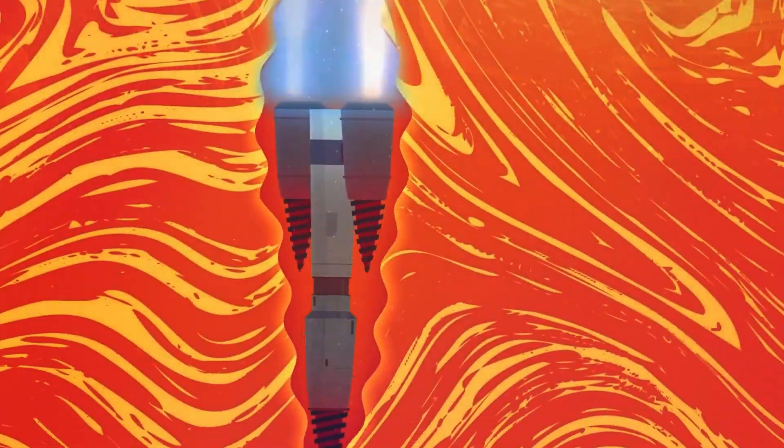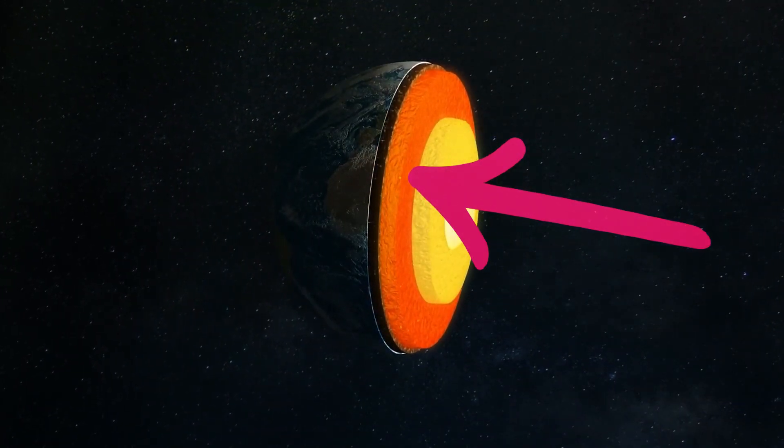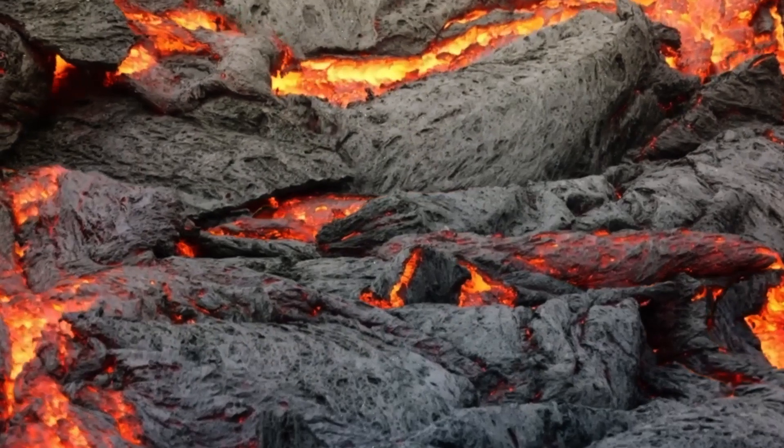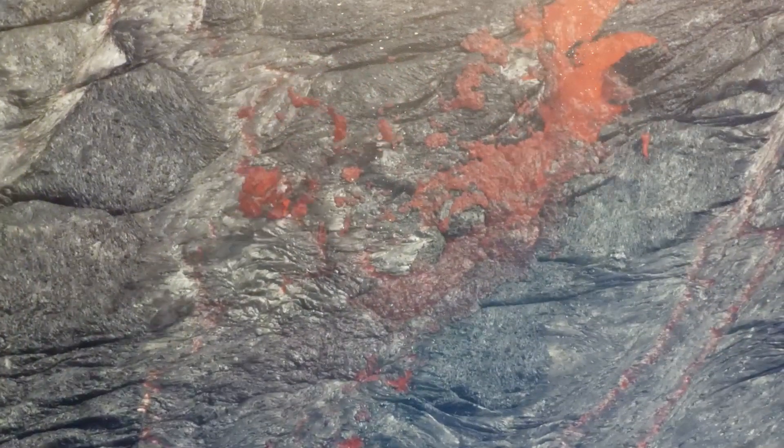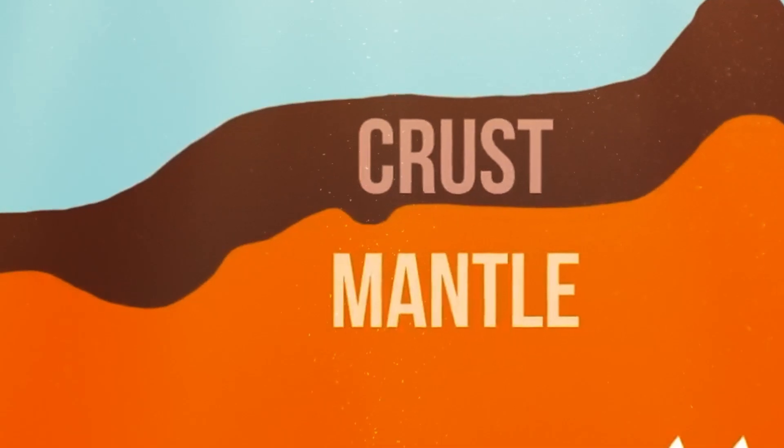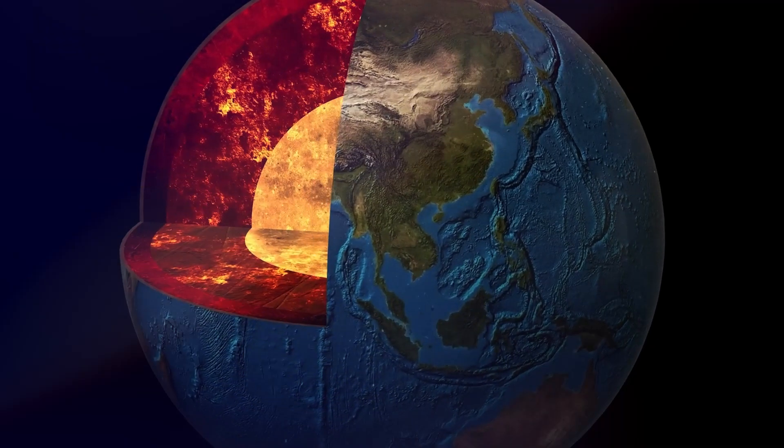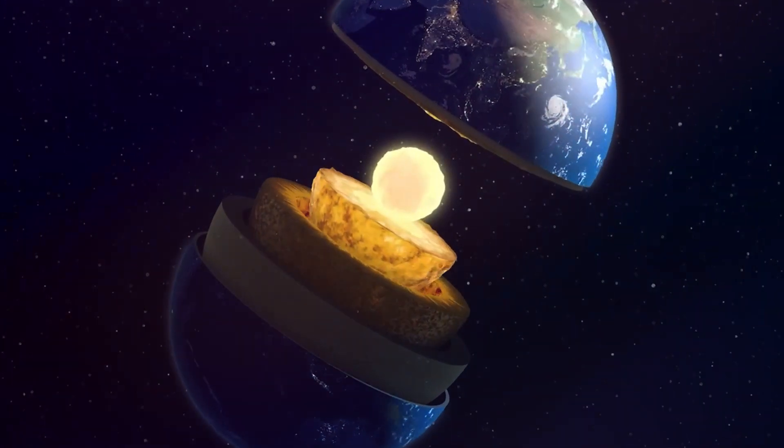Right beneath the crust, things get a bit more interesting. We hit the mantle, a thicker layer that makes up a whopping 84% of earth's volume. This layer is not molten lava but still pretty hot and fluid, making it more like a slow, gooey flow. This chunky middle layer extends from about 40 kilometers to a whopping 2,900 kilometers below the earth's surface.